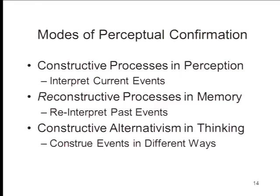These constructive processes in perception are one way in which we create the reality to which we're responding. When it comes to memory, there are so-called reconstructive processes. In the same way that environmental stimuli are inherently ambiguous, so are memory traces inherently ambiguous. The trace does not provide a complete representation of some past event. In order to remember a past event, we have to take whatever information is contained in a memory trace and combine it with knowledge, beliefs, and expectations to produce a mental representation of some events in the past.